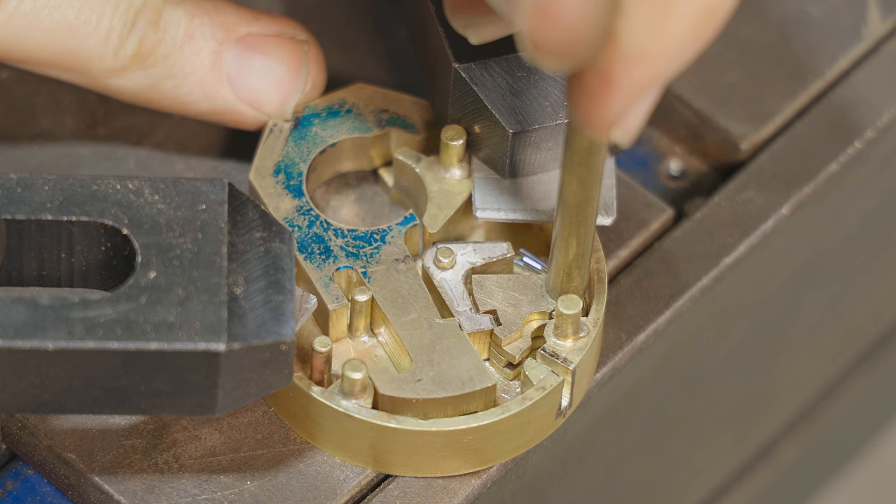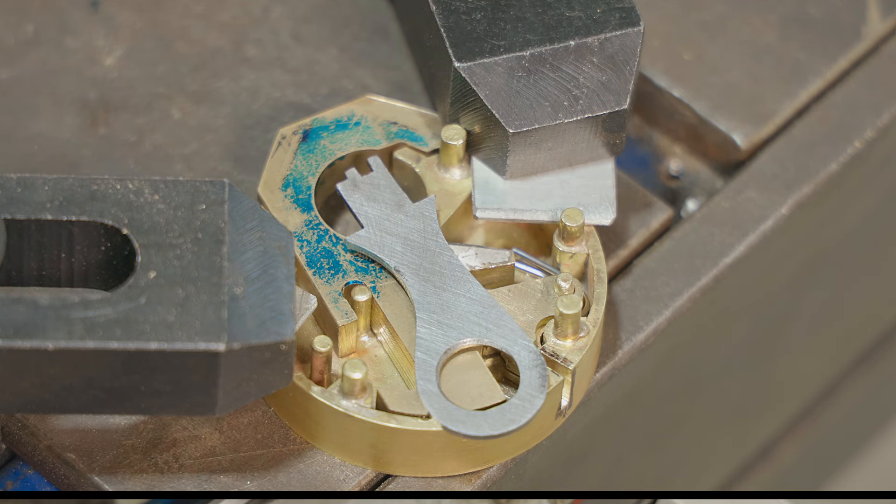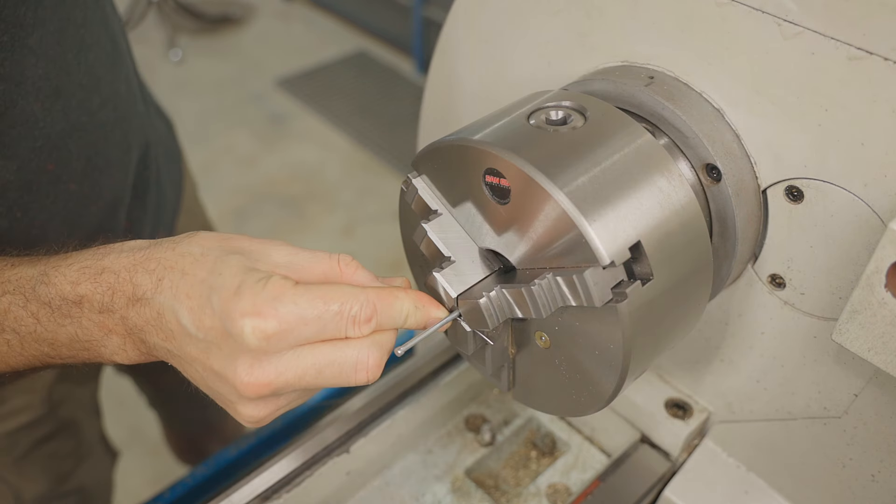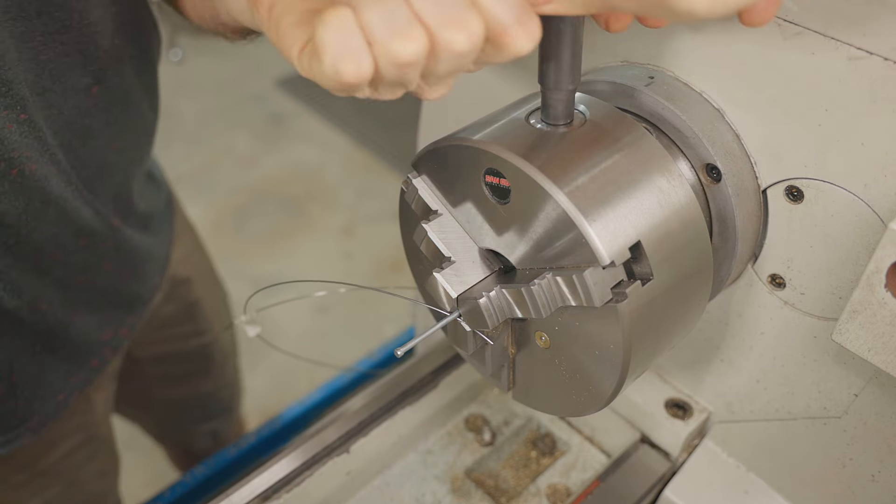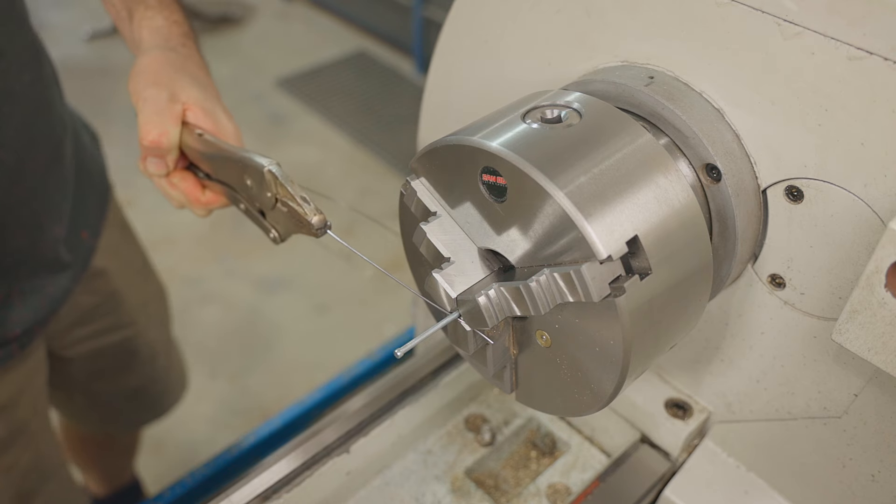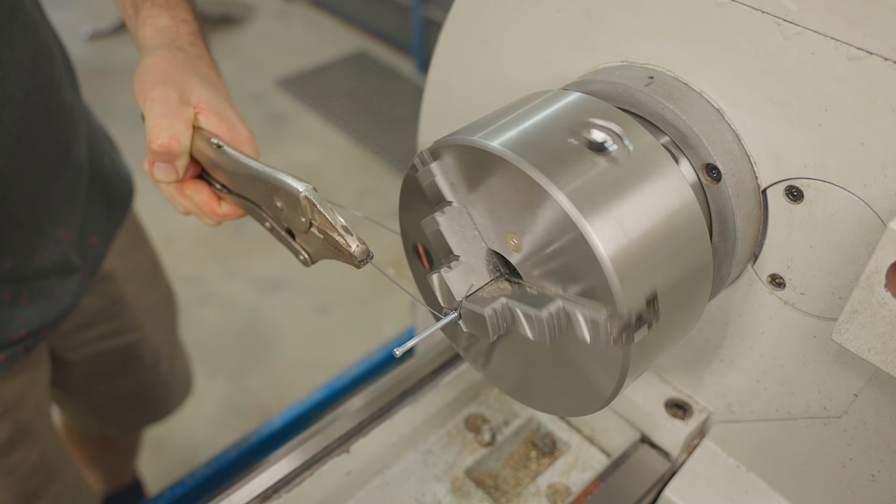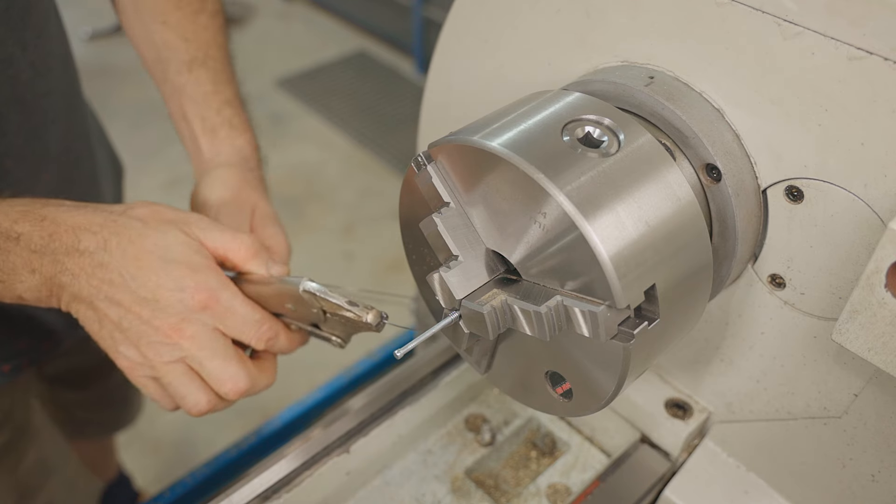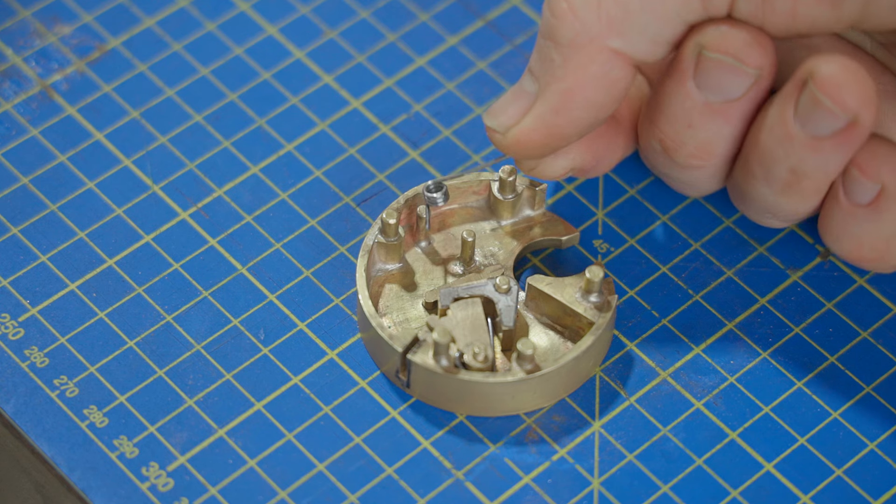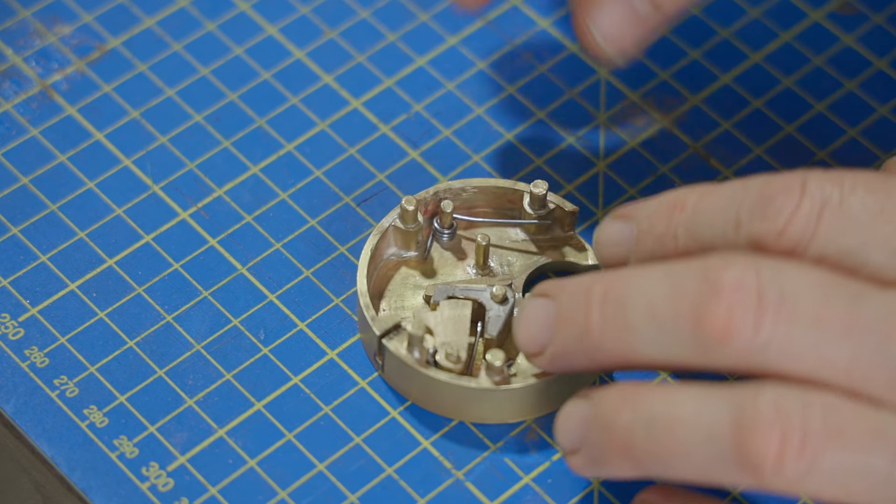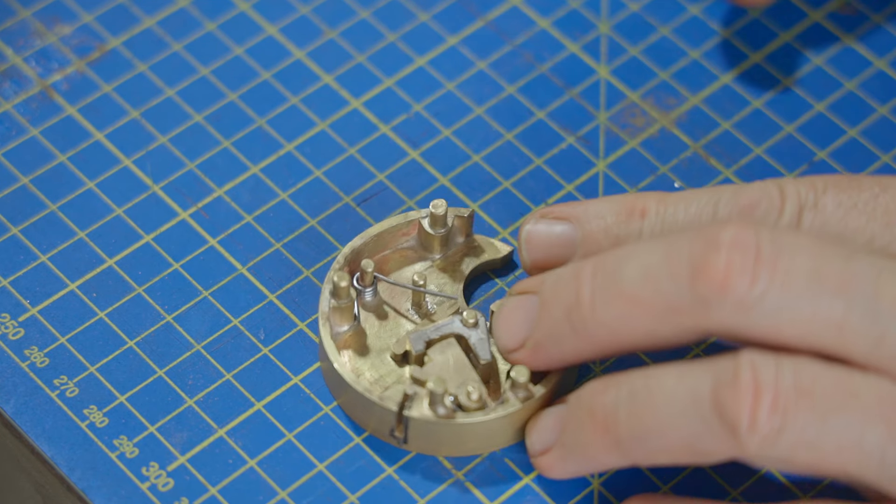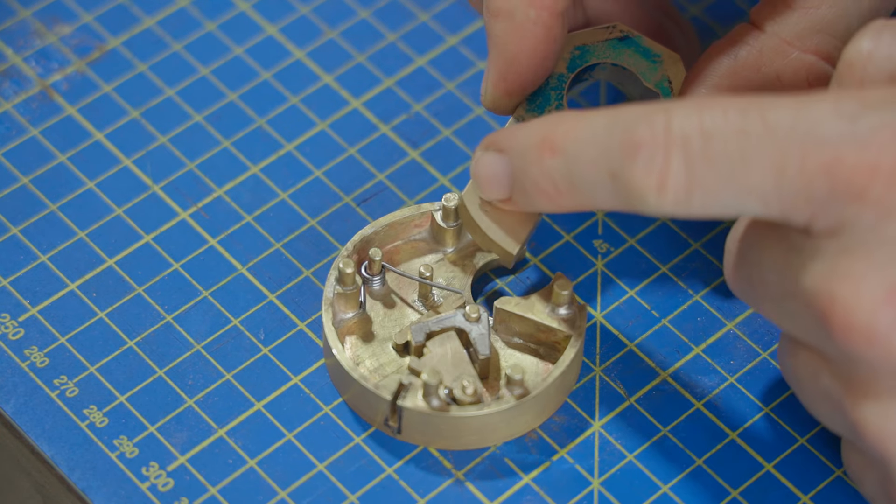The next thing is to add a spring to the shackle so it pops up and opens when the padlock is unlocked. I'll make the spring again but this time I'll do it on the lathe. I'll use a nail for a mandrel and pinch the end of the wire in one of the jaws. I've never made a spring like this before so this should be interesting. I'll put some tension on the wire and give the lathe a small blip at the slowest speed, and wow how cool was that, who knew it was that easy to make springs.